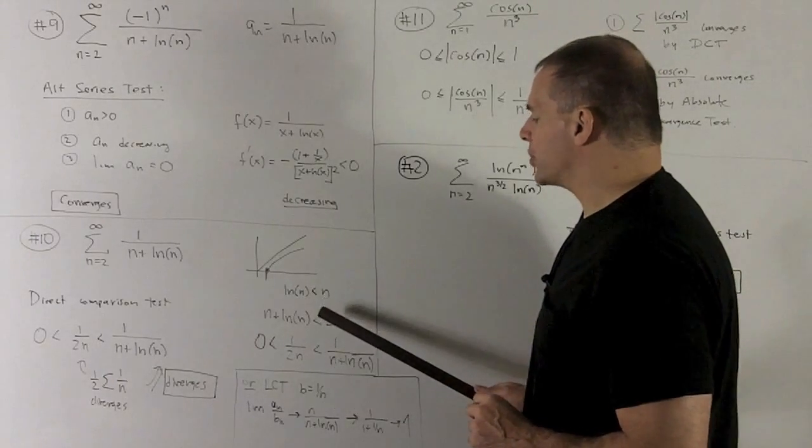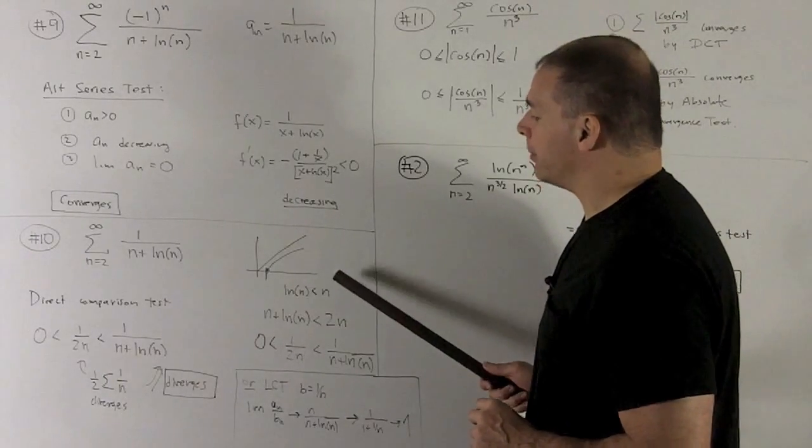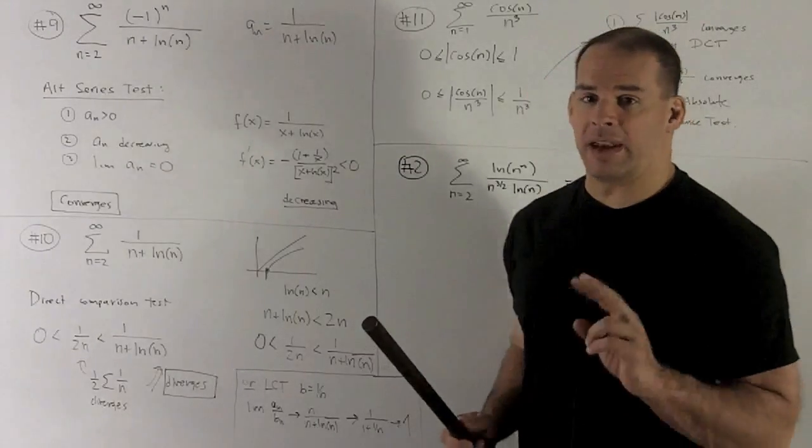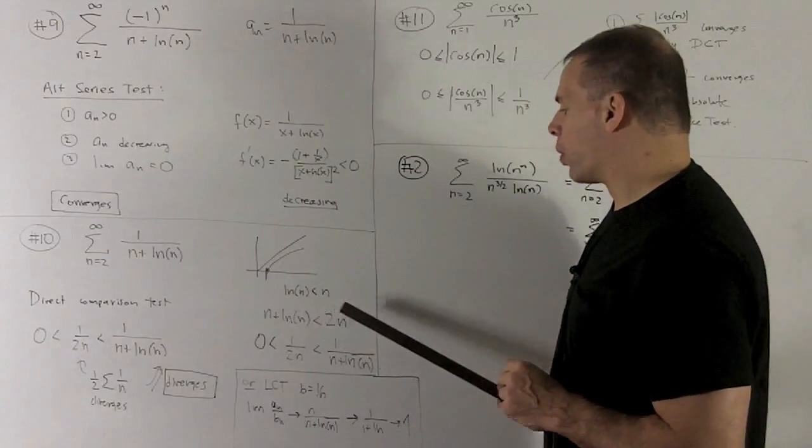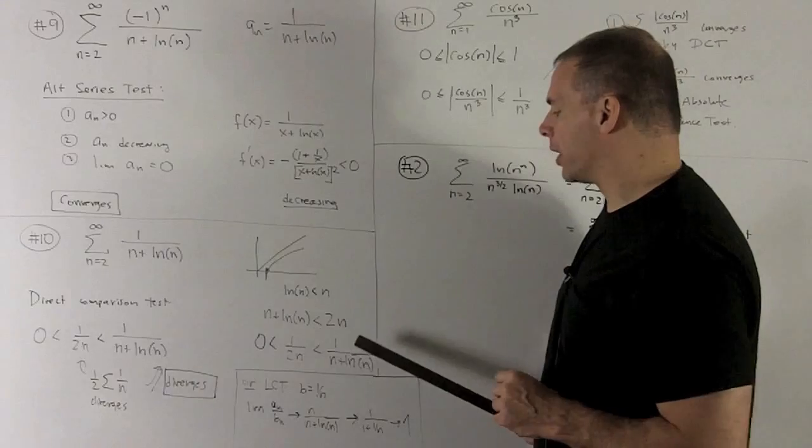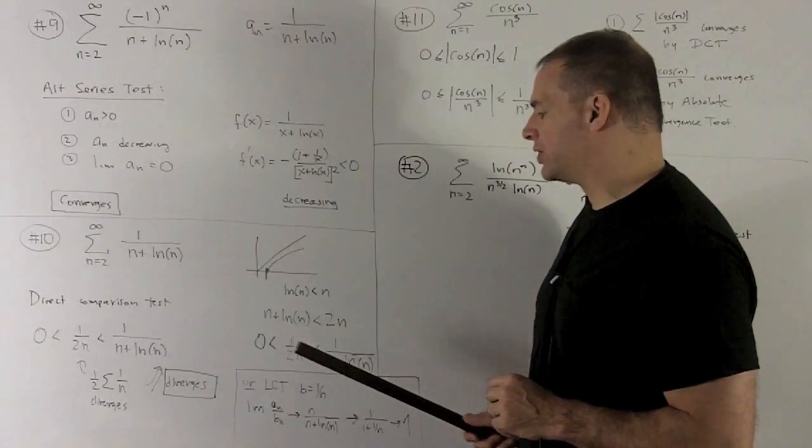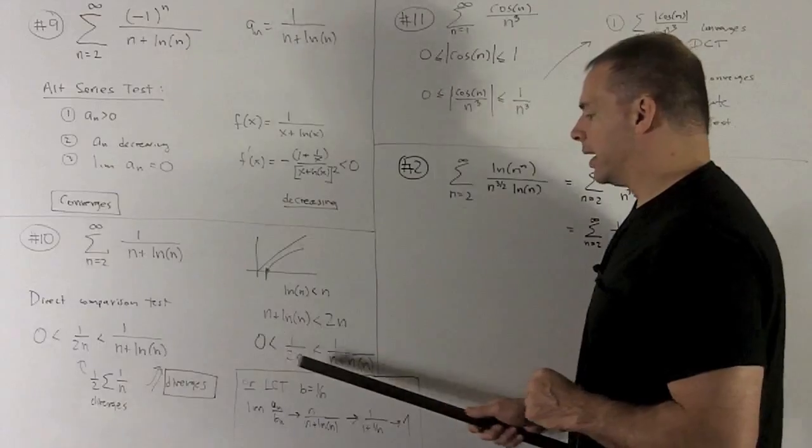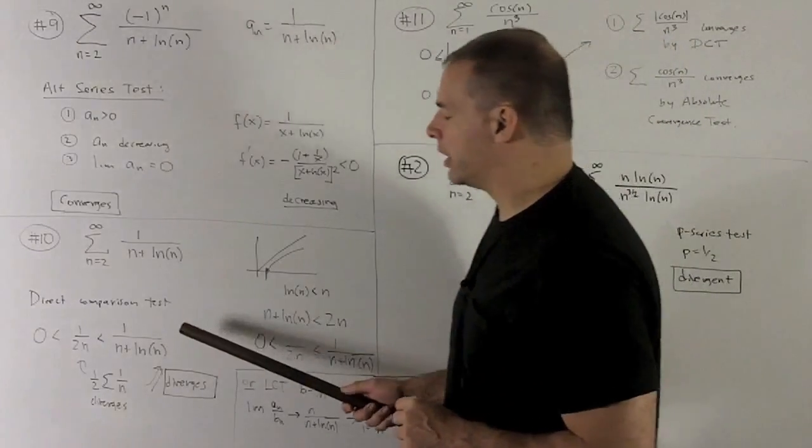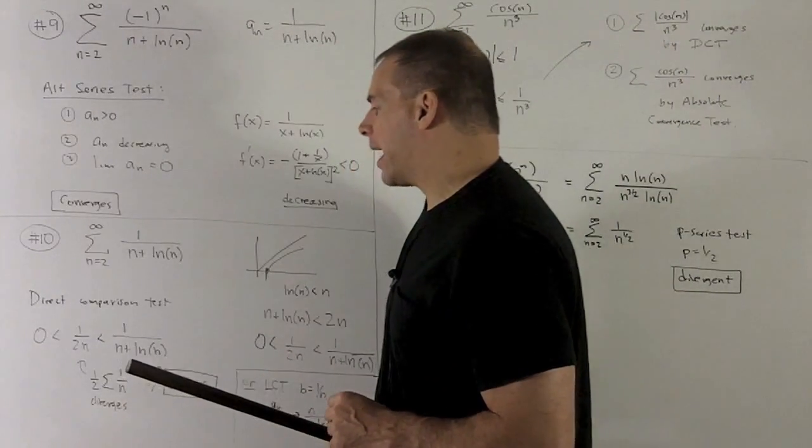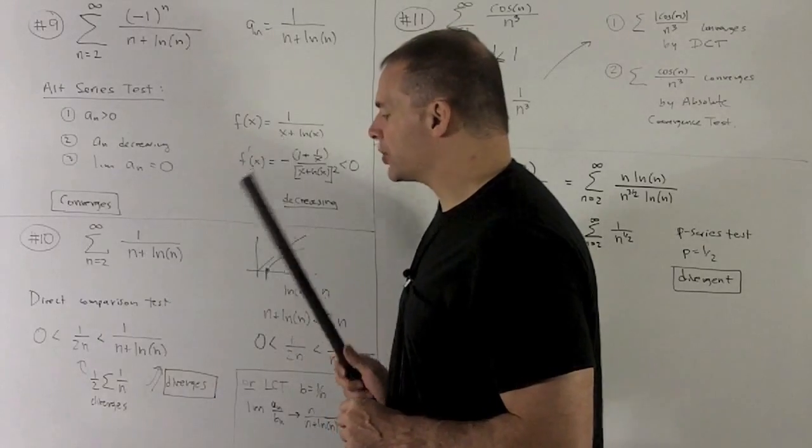And then, we divide both sides by 2n and by n plus natural log of n. Net effect there is just to switch the order of my terms and then put them both under 1. Also, 1 over 2n is bigger than 0. So, I have my inequality here. Move it over to here. What do I have? Direct comparison test says, first, note our sequence in the middle.